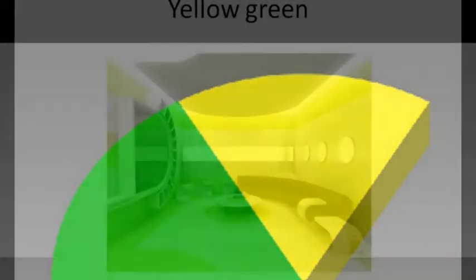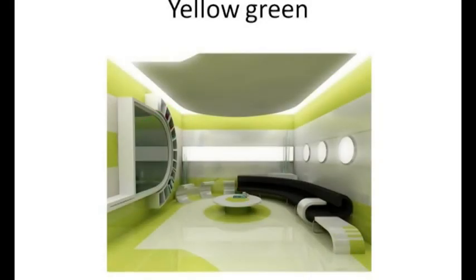Now, moving on to the next type of colours: the tertiary colours. They are a combination of one primary and one secondary colour. Yellow, a primary colour, when mixed with green, a secondary colour, gives yellow-green. Tertiary colours are named with the primary colour first, followed by the secondary colour.